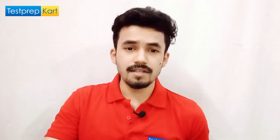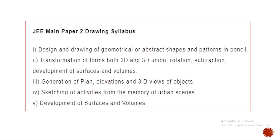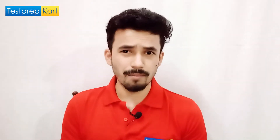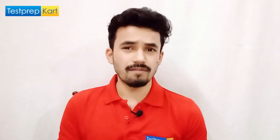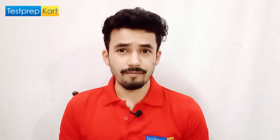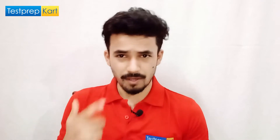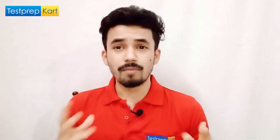Now the drawing syllabus consists of design and drawing of geometrical or abstract shapes and patterns in pencil. The second part involves transformation of forms both 2D and 3D — union, rotation, subtraction, development of volumes and surface areas, generation of planes, elevations and 3D views of objects, sketching of activities from memory of urban scenes, and development of surface and volume. In the drawing part there are majorly two questions worth 50 marks each.